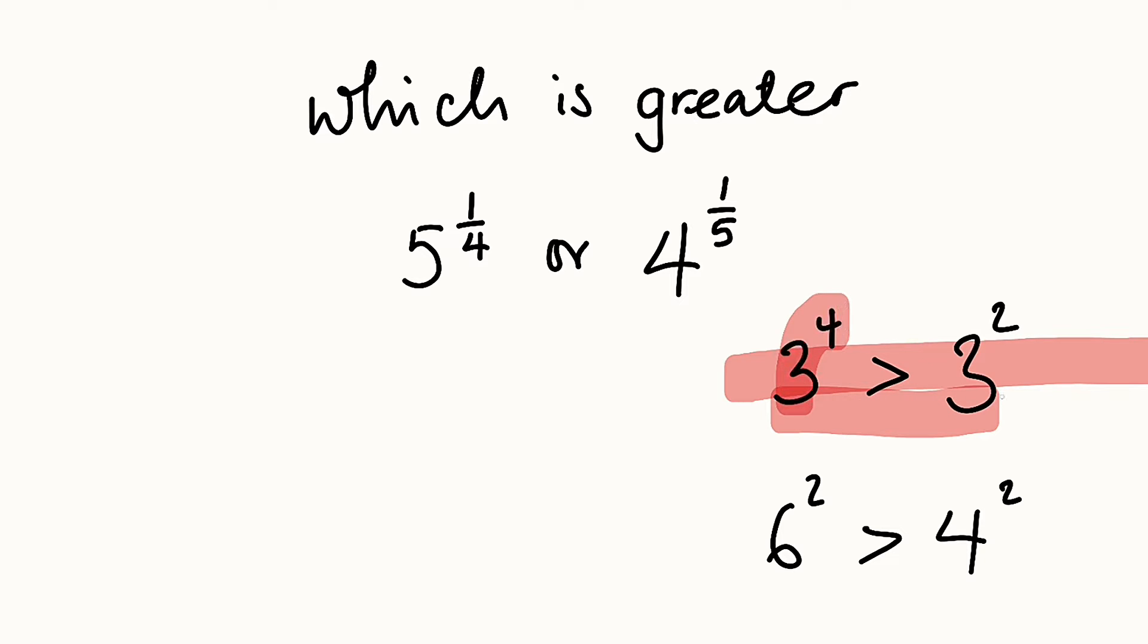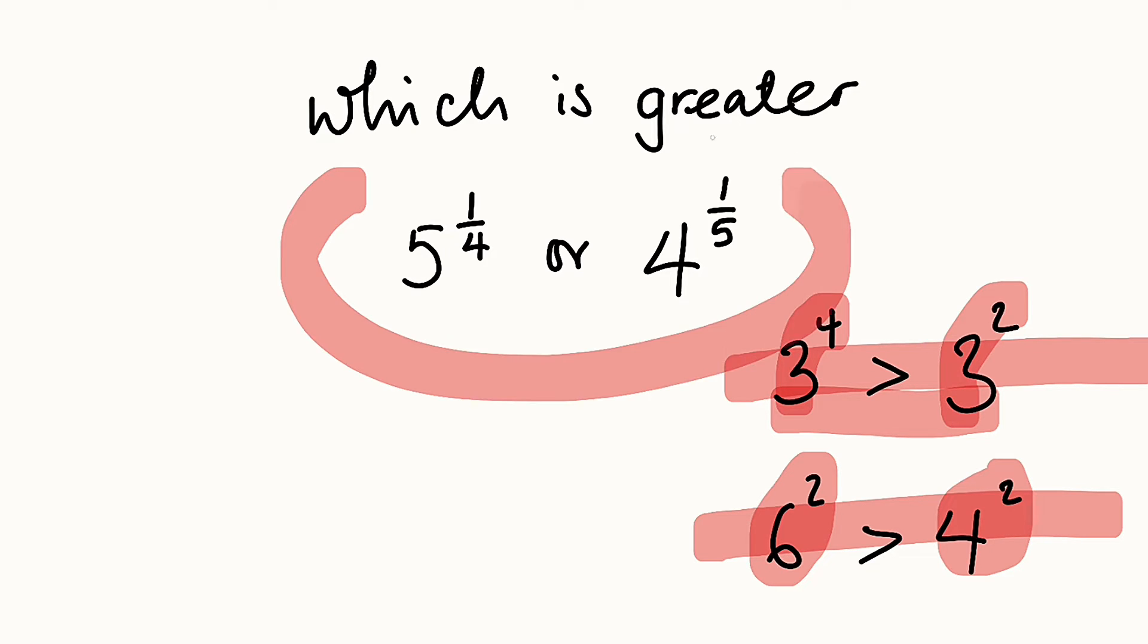If you have two or more values with the same exponents, that value with the highest base is said to be the greatest. This is why we have 6 to the power of 2 greater than 4 to the power of 2. But in our own case, you can see both basis and exponents are entirely different, so how can we tackle this problem?